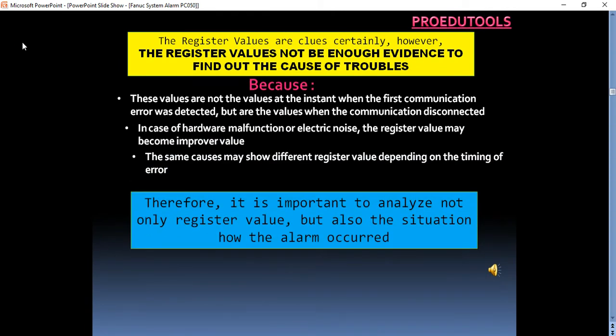These values are not the values at the instant when the first communication error was detected, but are the values when the communication disconnected. In case of hardware malfunction or electric noise, the register value may become improper value. The same causes may show different register values depending on the timing of error. Therefore, it is important to analyze not only register value, but also the situation how the alarm occurred.